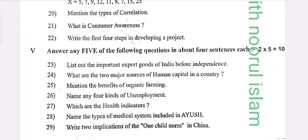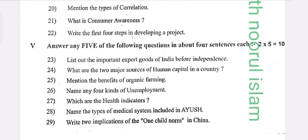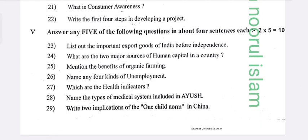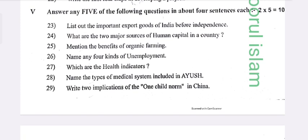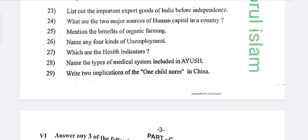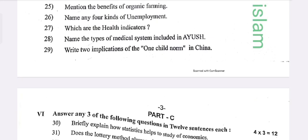Twentieth question: Mention the type of correlation. Twenty-first: What is consumer awareness? Twenty-second: What are the first four steps in developing a project? Twenty-third: List the important export goods of India before independence.